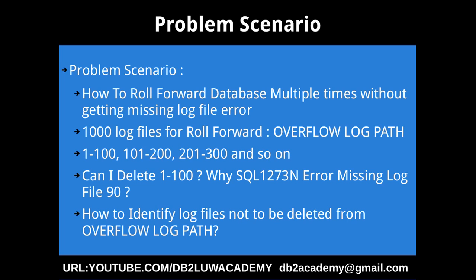So you want to split your roll forward into chunks: 1 to 100, 101 to 200, 201 to 300, and so on. The question is: after issuing the roll forward command with log files 1 to 100 in the overflow log path, the second time can I delete 1 to 100 and copy 101 to 200 transactional log files into the overflow log path? If you do that, you may get SQL1273N error — missing log file — for some log number between 1 to 100.